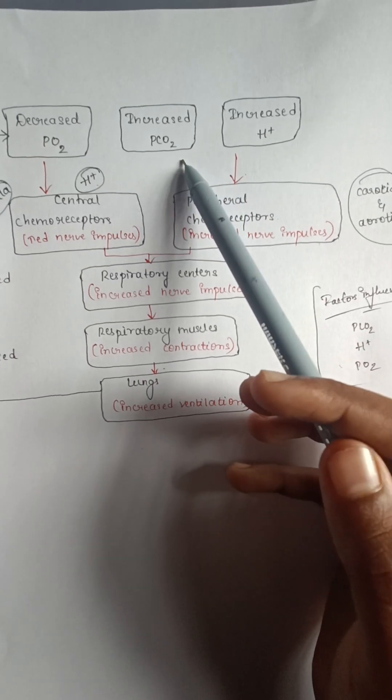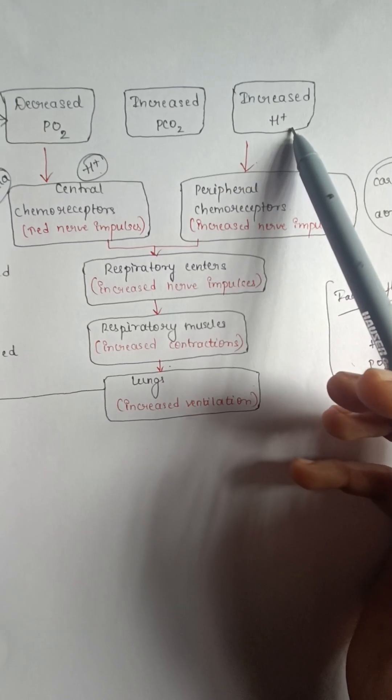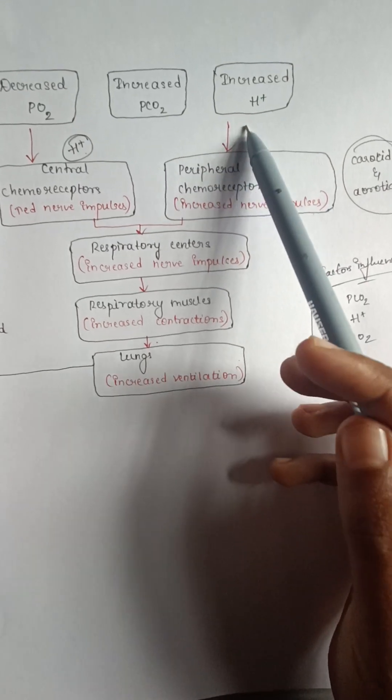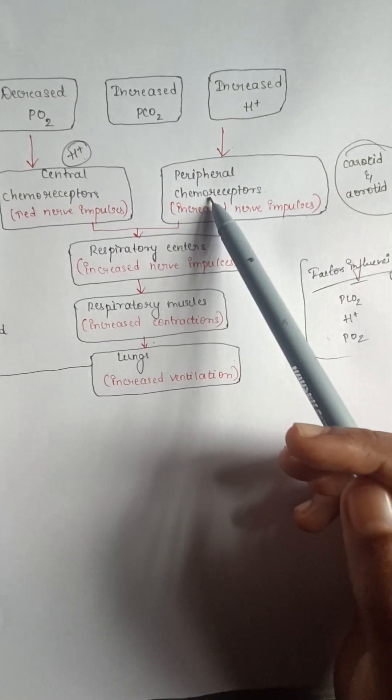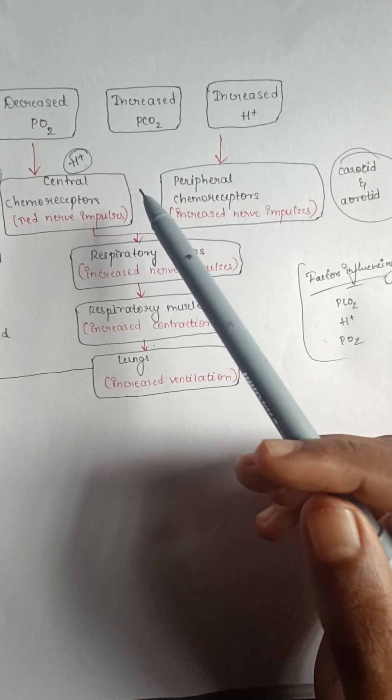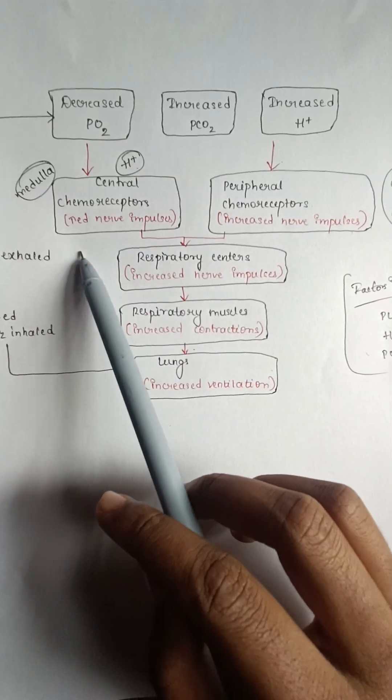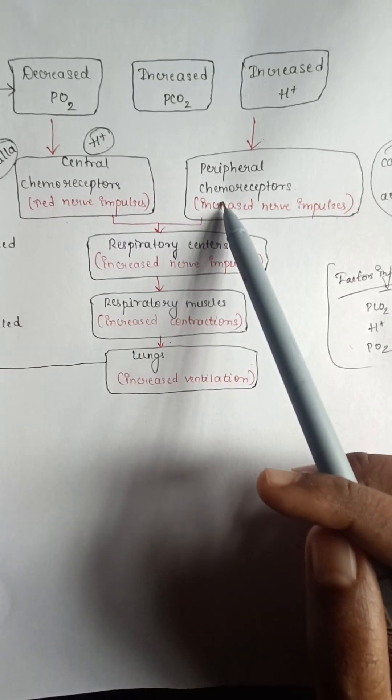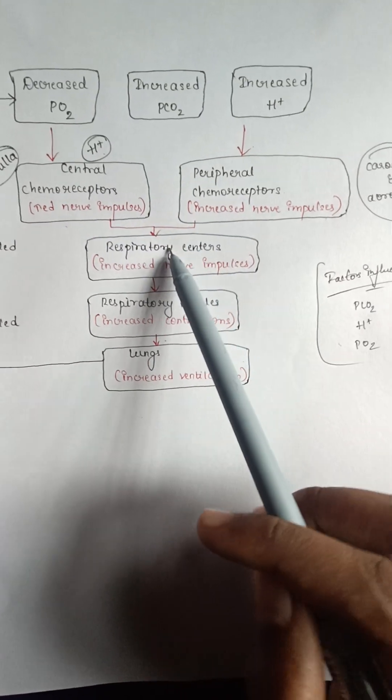Also, when there is an increase in H+ ion concentration - H+ ion concentration mainly influences peripheral chemoreceptors. When central chemoreceptors and peripheral chemoreceptors get activated, it activates the respiratory center.